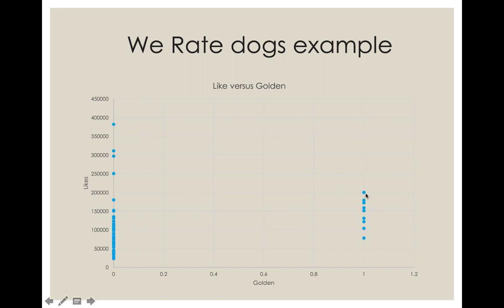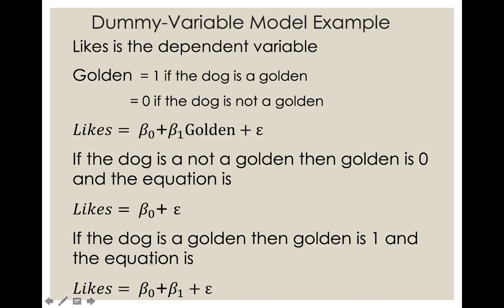In your multiple linear regression project, you don't necessarily have to include graphs against dummy variables because you can't really see that much happening. On average, the dogs who get more likes are goldens versus not goldens. The first thing we might want to do is include golden as our only independent variable: golden equals one if the dog is a golden, zero if not. The number of likes equals beta naught plus beta one times golden plus our error term.